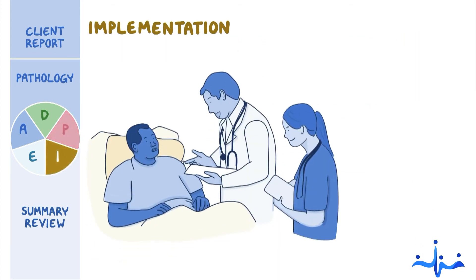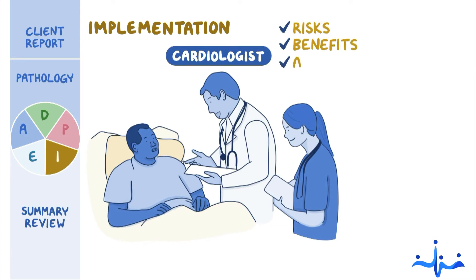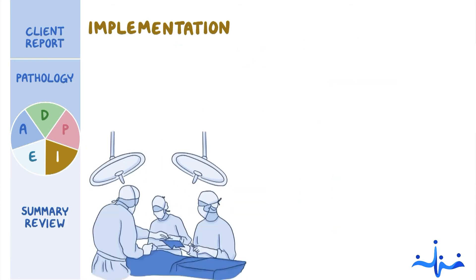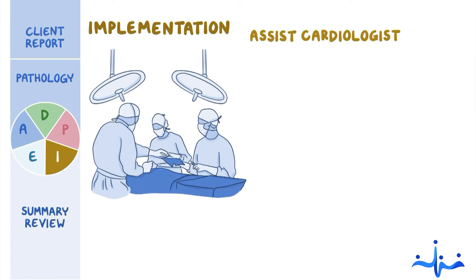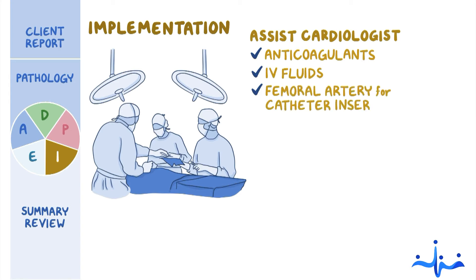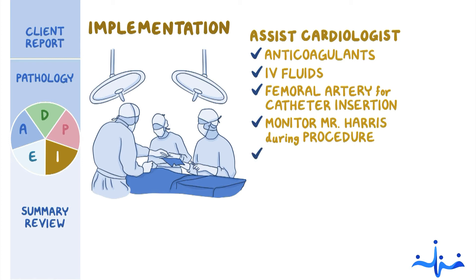It's time to implement your plan with the interdisciplinary team. After the cardiologist explains the risks, benefits, and alternatives of PCI to Mr. Harris, you ensure the consent form is signed. Along with the surgical technician, you assist the cardiologist throughout Mr. Harris' PCI, including administering anticoagulants, IV fluids, and preparing the femoral artery for catheter insertion. You monitor Mr. Harris during the procedure and administer IV nitroglycerin, as instructed, to decrease coronary vasospasm.